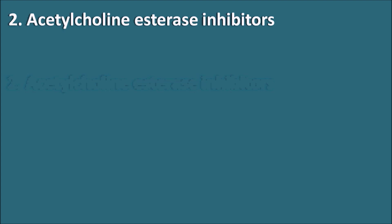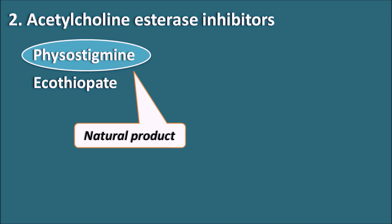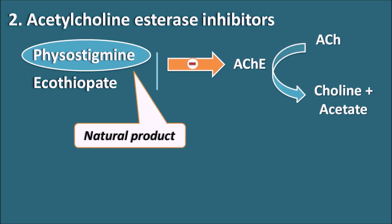The second type is indirectly acting cholinergic agonists, or acetylcholinesterase inhibitors. Drugs in this category include physostigmine and ecothiopate. Ecothiopate is an irreversible acetylcholinesterase inhibitor. Physostigmine is a natural product from the Physostigma species. These drugs inhibit the acetylcholinesterase enzyme, which normally cleaves acetylcholine into choline and acetate within the synaptic cleft. By inhibiting this metabolism, they improve acetylcholine levels, increasing cholinergic transmission and increasing the outflow of aqueous humor, acting similarly to direct acting cholinergic agonists. Their side effects are similar to those of direct acting agonists.